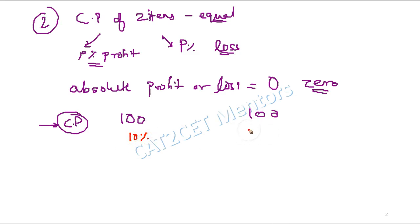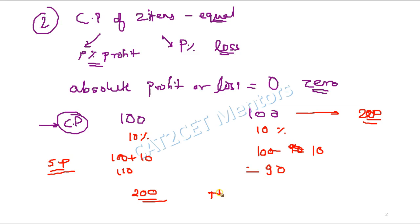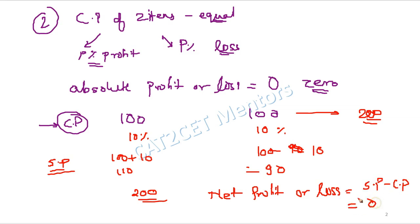One article is sold at 10% profit and another at 10% loss. So the selling price in the first case is 110 and in the second case is 90. The net cost price is 100 plus 100, which is 200, and the net selling price is 110 plus 90, which is also 200. So net profit or loss is SP minus CP, equal to zero.